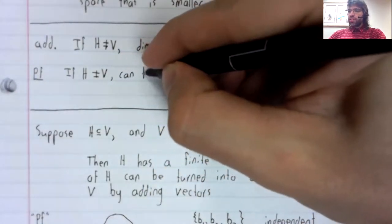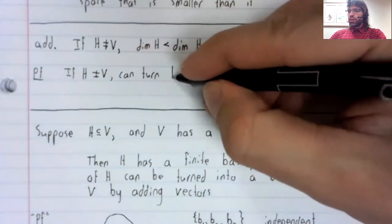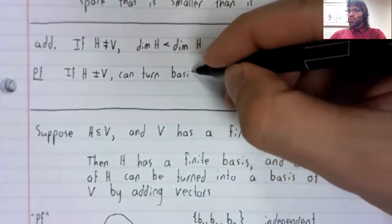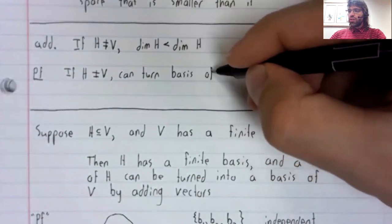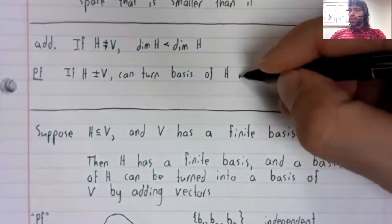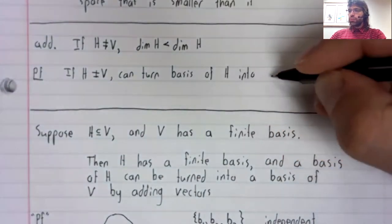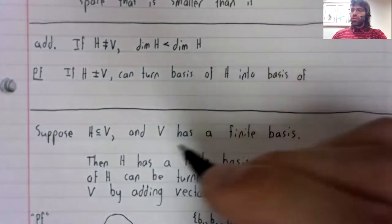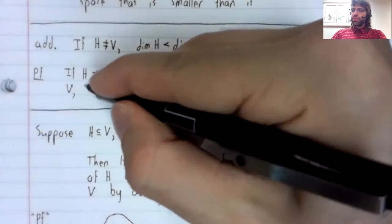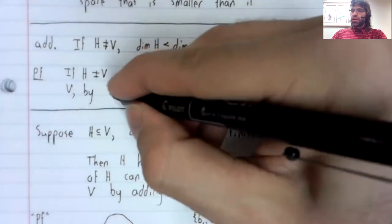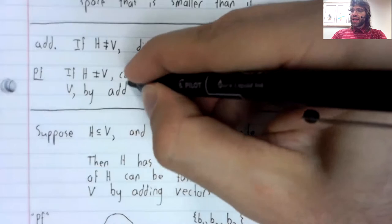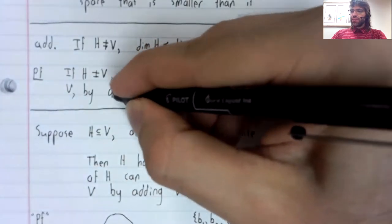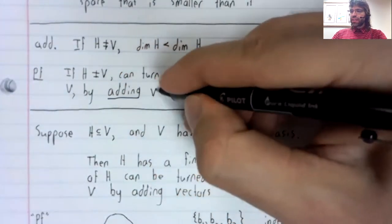So we can turn a basis of H into a basis of V by adding vectors.